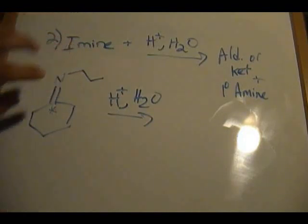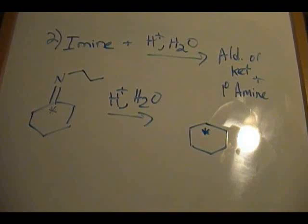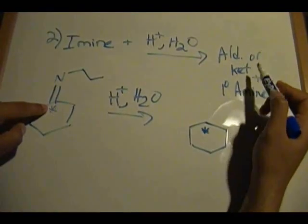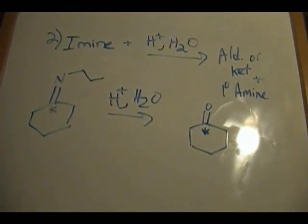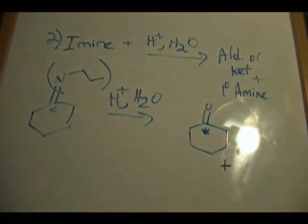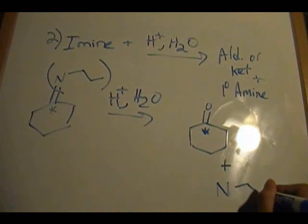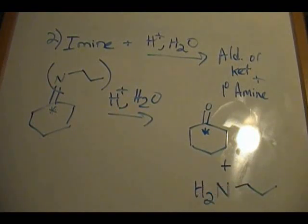There you have it. Since we're forming an aldehyde or ketone in the reverse reaction, we attach a double-bonded oxygen to the star carbon. So that's one product — your ketone in this case. And for our primary amine: we have our nitrogen with a one-two-three carbon group hanging off of it and two H's. There's our ketone and our primary amine.